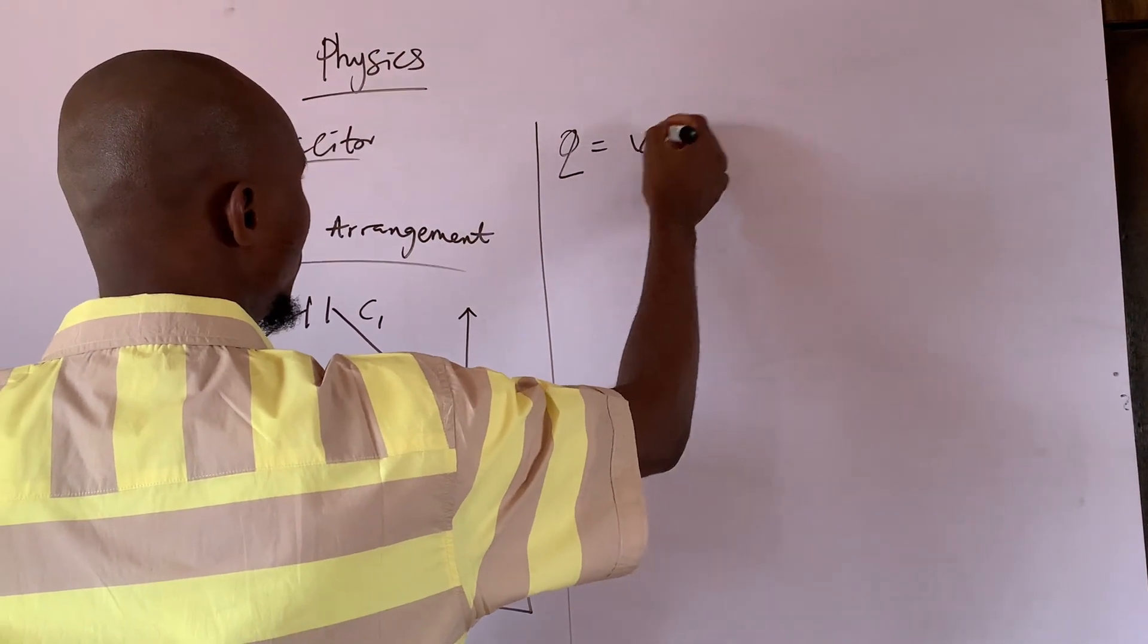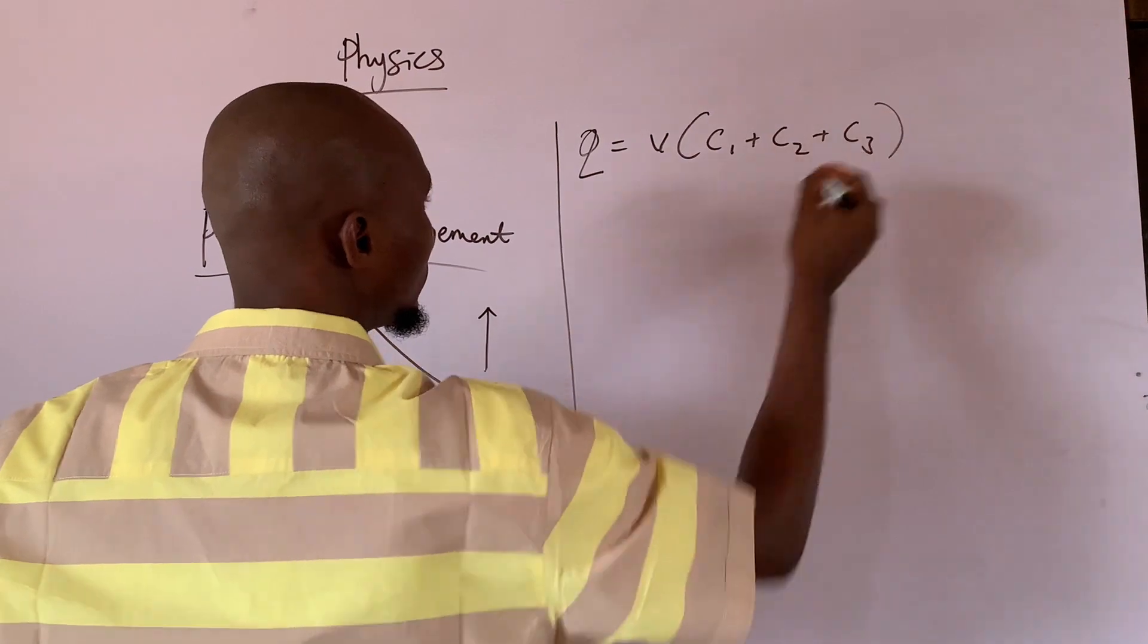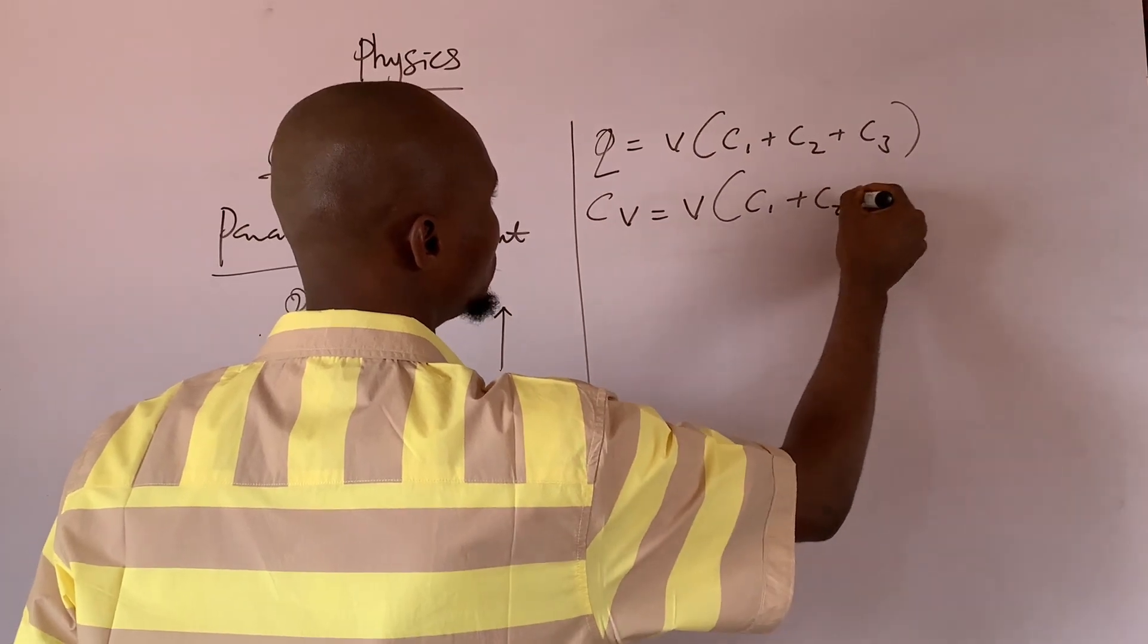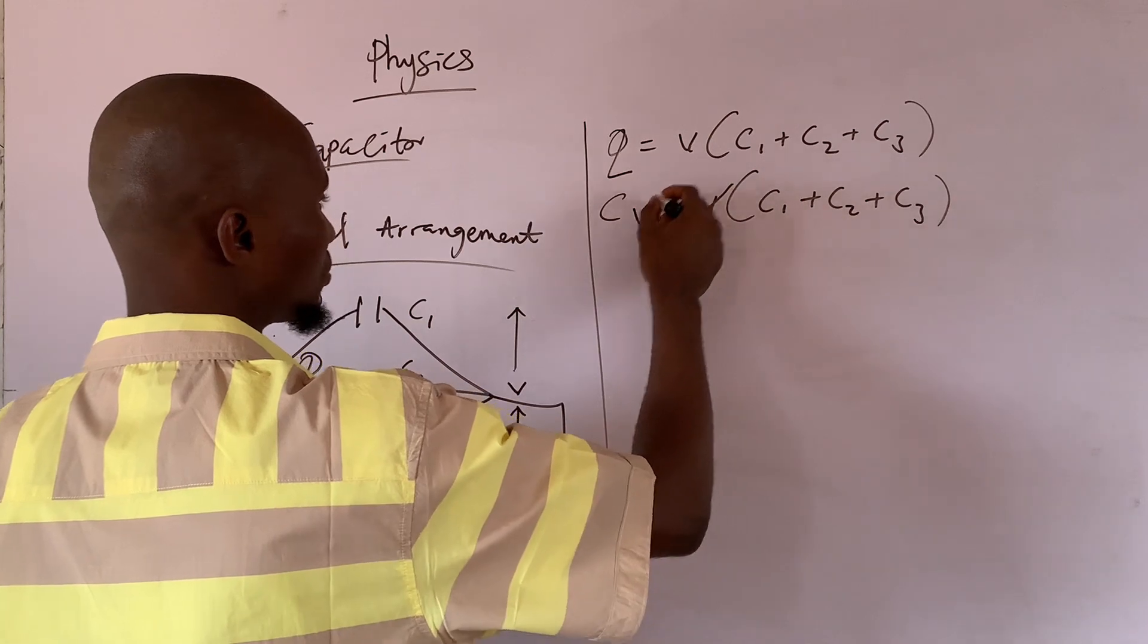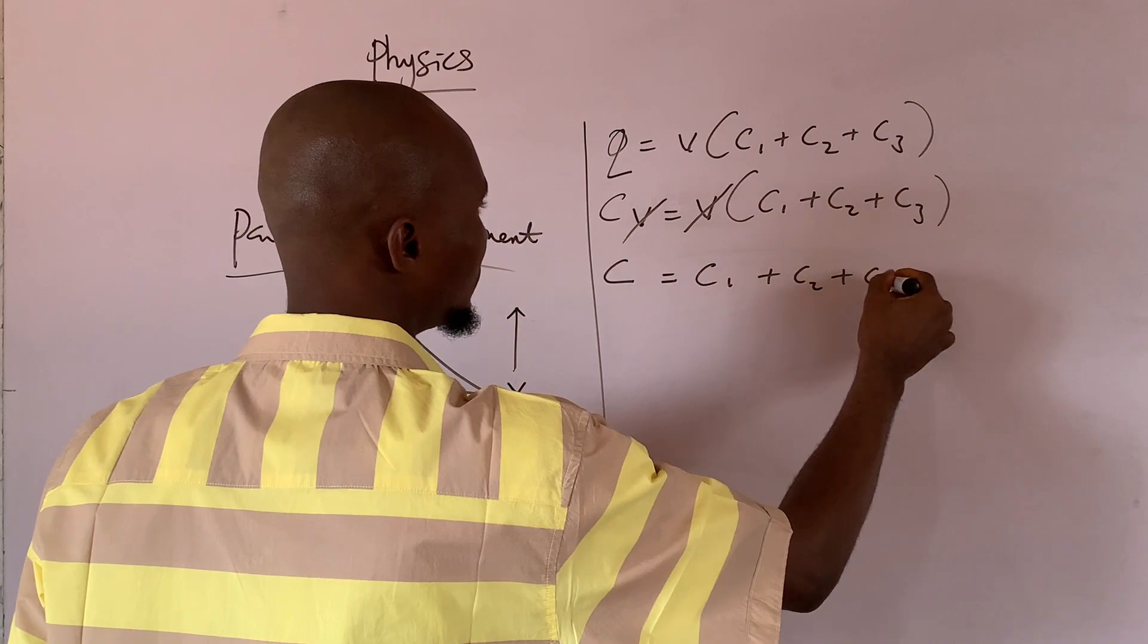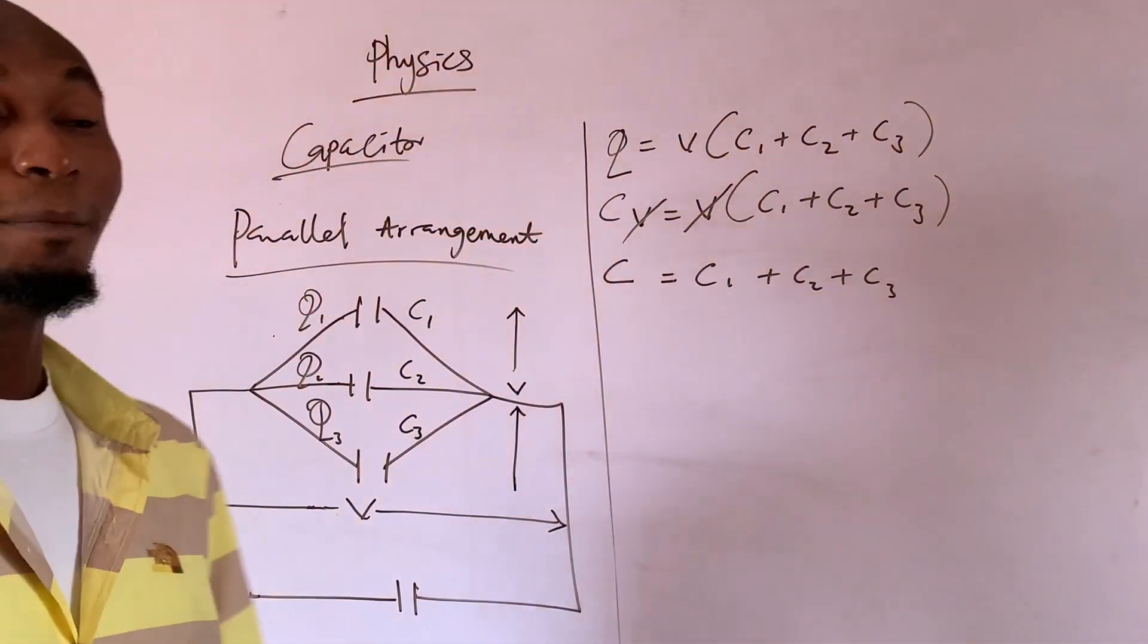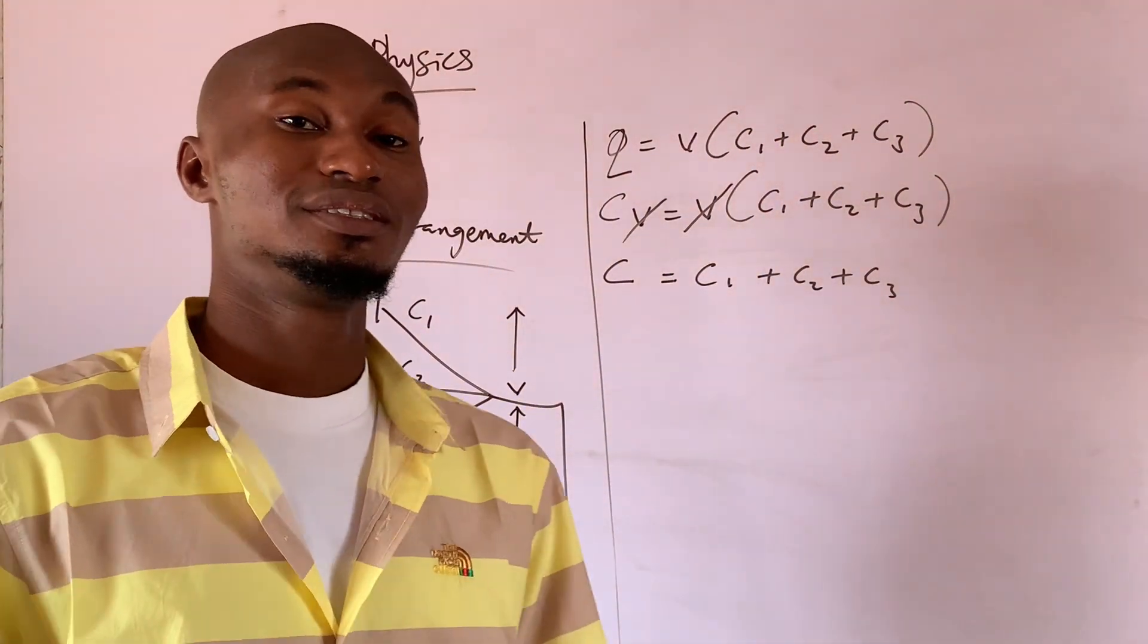You put it here. Now let me work over here. Now over here, let me repeat this question here: V bracket C1 plus C2 plus C3. Do you get that? So, CV equals to V bracket C1 plus C2 plus C3. Now, this V, we cancel out. We have C equals to C1 plus C2 plus C3. We can call this CT, that is C total.